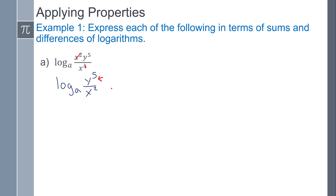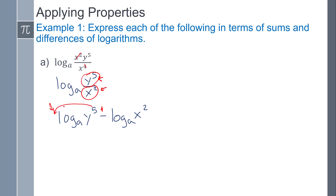Using the quotient rule, I break it into two separate logs. Since x squared is in the denominator, its log is negative. The y to the fifth is in the numerator, so it's positive. Once expanded, I can move the five to the front using the power rule and move the two to the front, giving the fully expanded log.